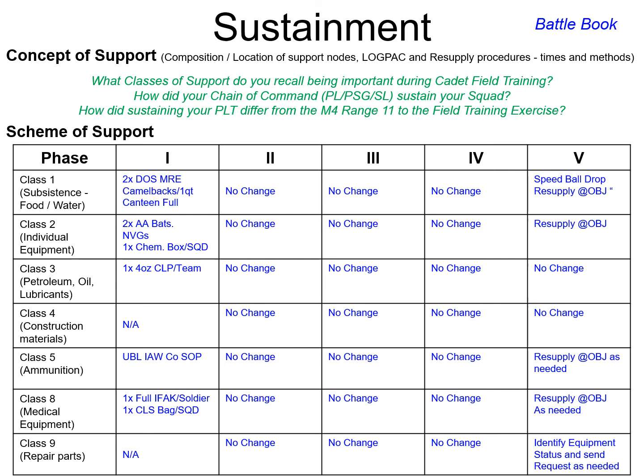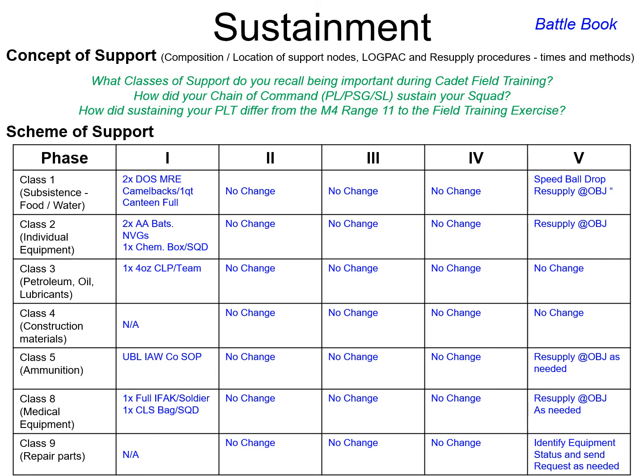Now this is just an example of that battle book page all filled out, so you can have this as a reference and get some ideas of what kind of things we're putting in across all the phases of our operation. The next slide in the battle book lets us go through our phases and think about contingency plans and come up with our medical plan — where are we going to locate our CCP along the way, what's our EPW plan? So when you're giving your order, you want to think through all these issues, lay them out, and just have a plan thought out and put down on paper.